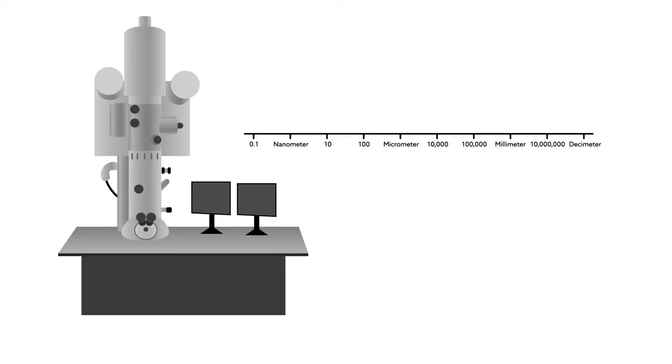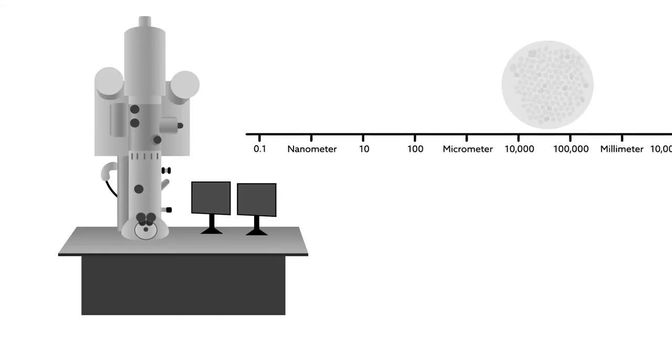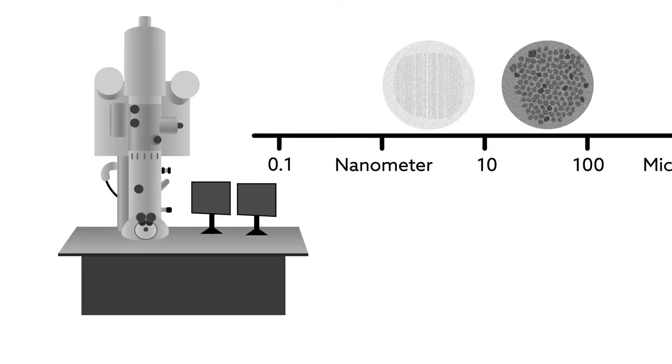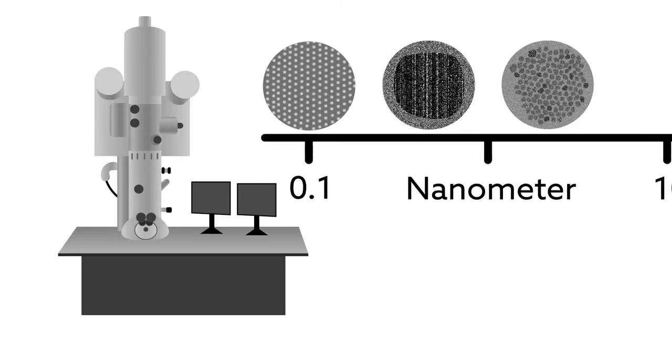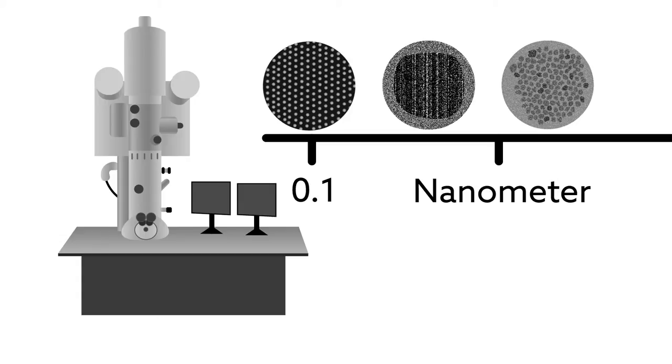Over the past decade, tremendous progress has been made to push the resolution of the transmission electron microscope, or TEM, to smaller and smaller scales. As a result, scientists can now routinely image individual atoms in many materials.